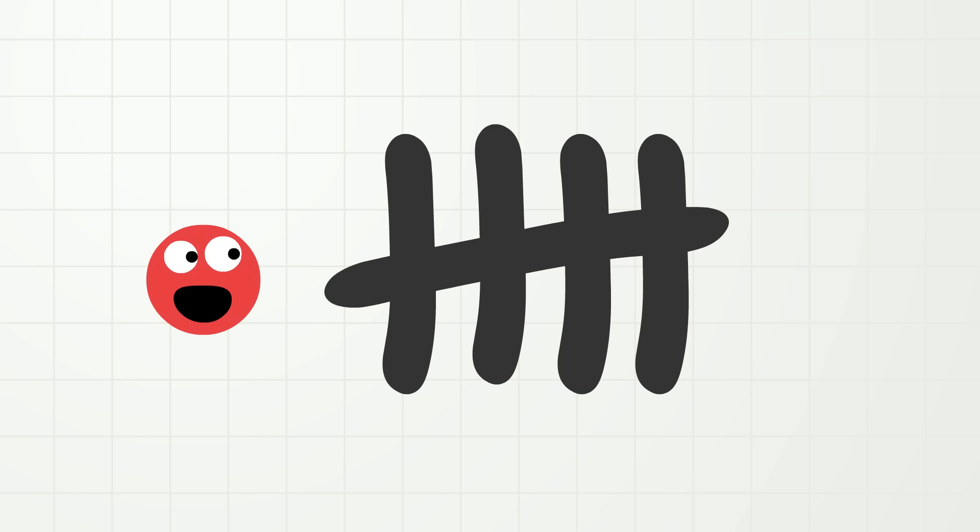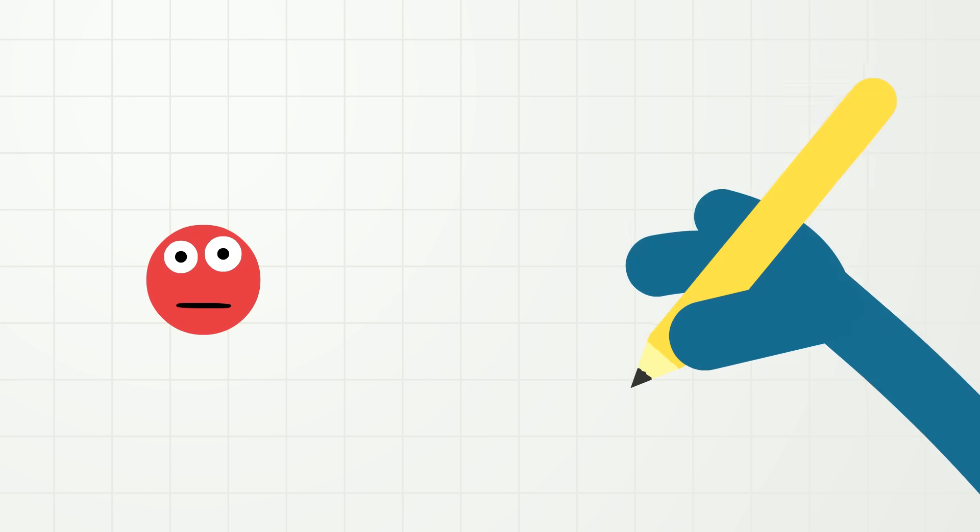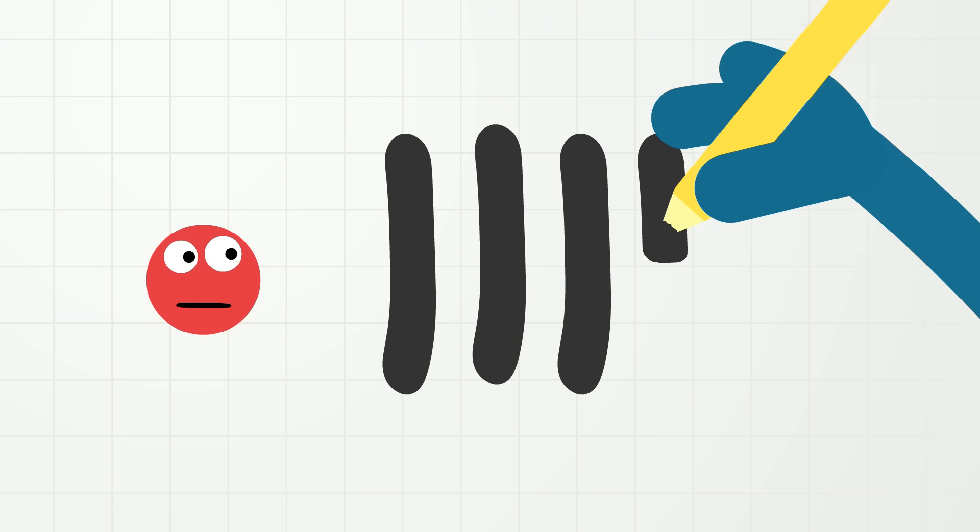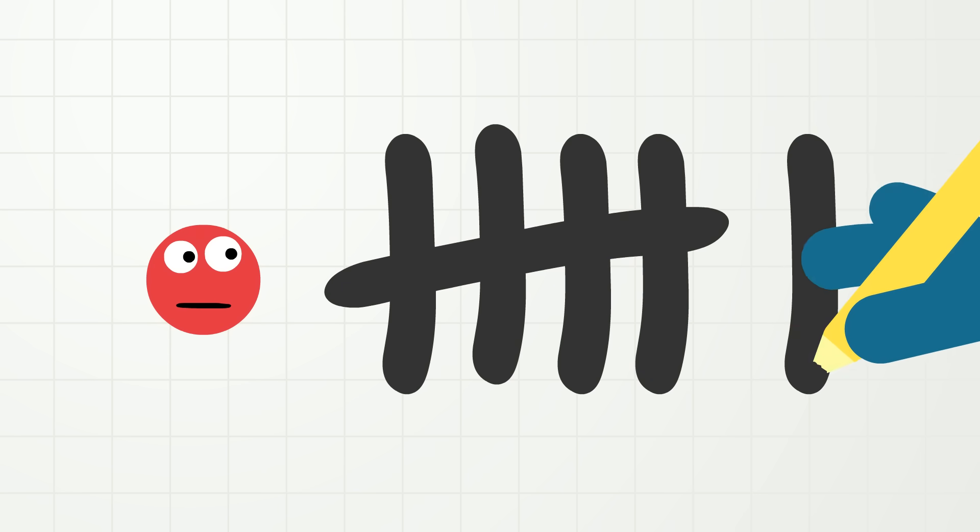And now we know we have a group of five. But after five, then we start all over again and make a new group. So when we count up to six, this is how we do it with tally marks. One, two, three, four, five, and six!